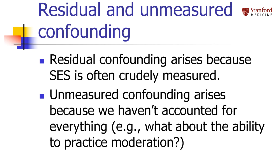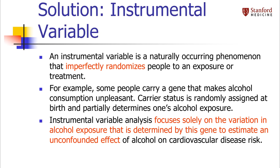There also may be intangible differences between moderate drinkers and other groups that we simply can't measure. Moderate drinkers have the ability to drink in moderation, so maybe they also practice moderation in other areas of their lives, which could explain their healthier hearts. Randomization prevents unmeasured and residual confounding by ensuring that confounders are balanced in different groups, but we can't always do a randomized experiment. Instrumental variable analysis offers a compromise between an observational study and a randomized trial.